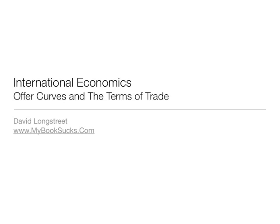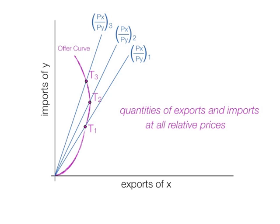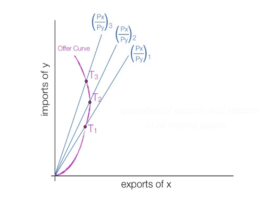In this tutorial, I'm going to talk about offer curves and how offer curves are created. An offer curve looks something like this, and what it does is it measures quantities of exports and imports at all relative prices. By relative prices, I mean the price ratio of X and Y. An offer curve shows different levels of trade at different price ratios.